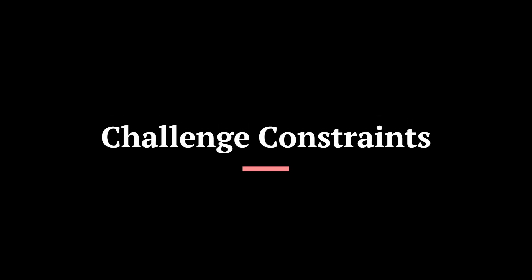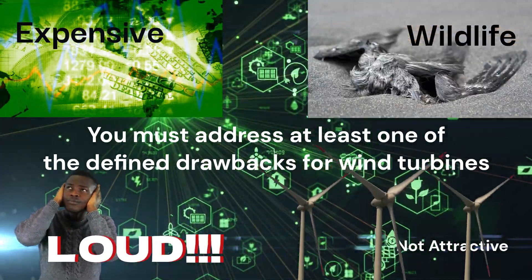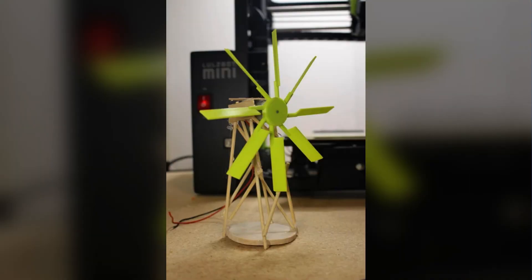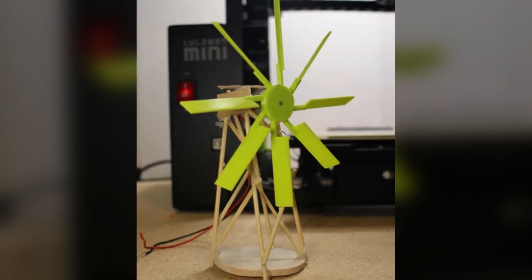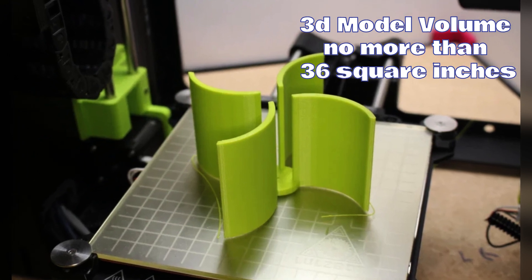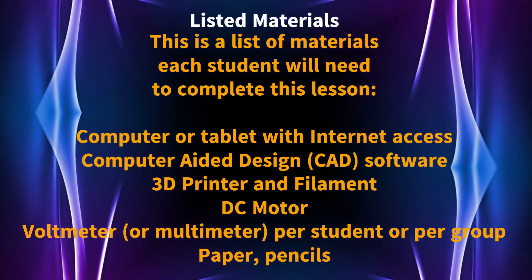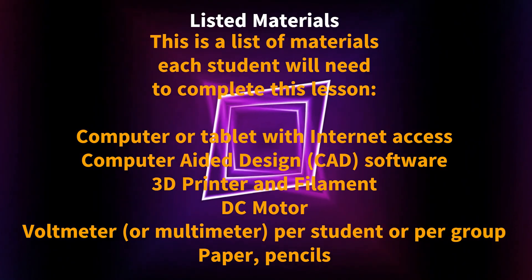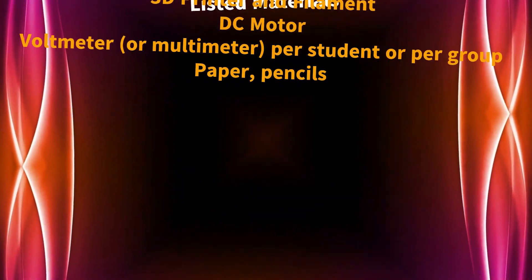Challenge constraints include but are not limited to: you must address at least one of the defined drawbacks for wind turbines. You have one day to brainstorm, three days to build, and one day to test and evaluate. You must design your prototype to support the provided DC motor that will act as your generator. Your 3D model build volume may not exceed 36 cubic inches. You must incorporate at least three different materials. If you have any questions, please read the text and contact your instructor.